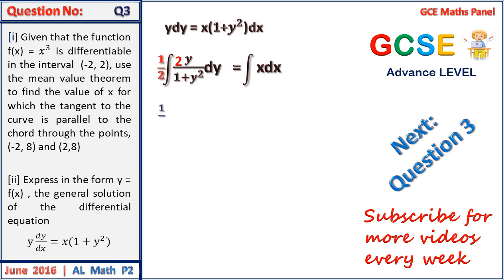On the left hand side, we have a half ln 1 plus y squared to be equal to, on the right hand side, a half x squared plus a constant k.